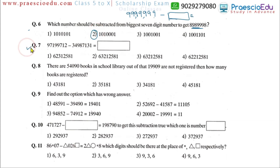Question number 7 is a subtraction. Please carry out this subtraction in the horizontal manner and you will get the correct answer, which is option number 4.